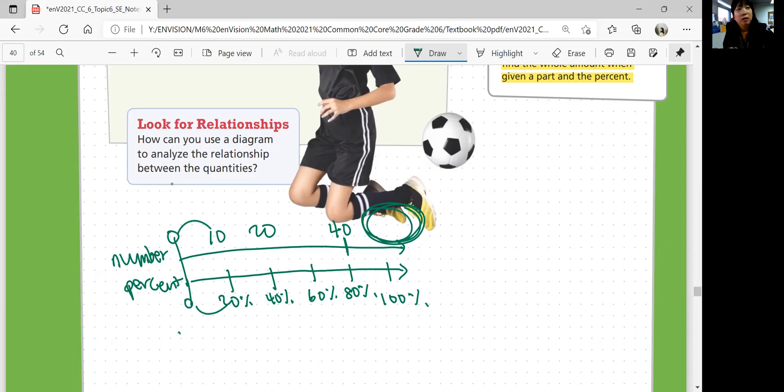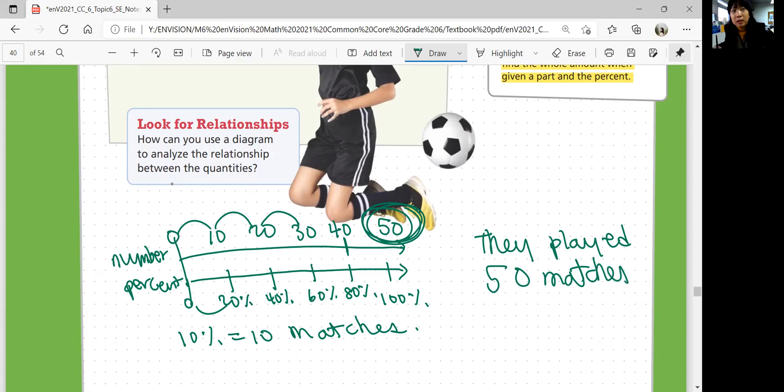So every 20% is equivalent to 10 matches. So you can say, you can count that every time your percent increases by 20%, you get 10 matches. So 10, 20, 30, 40, and 50 matches total. So you can figure out the pattern like that and figure out the whole. But we'll learn how to figure out the whole using the equation and by algebra. So they played total of 50 matches would be our answer.